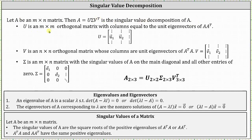U is an M by M orthogonal matrix with columns equal to the unit eigenvectors of A times A transpose. V is an N by N orthogonal matrix whose columns are unit eigenvectors of A transpose times A — just remember we're looking for V transpose for the singular value decomposition. Sigma is an M by N matrix with the singular values of matrix A on the main diagonal and all other entries zero.